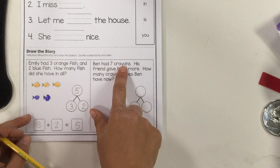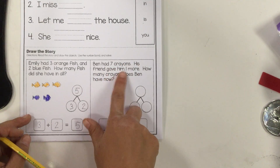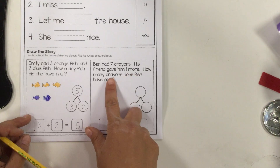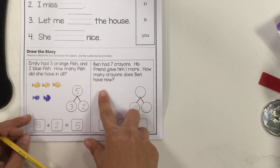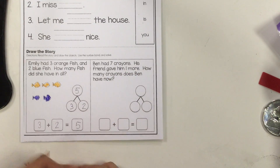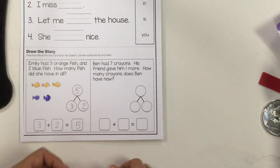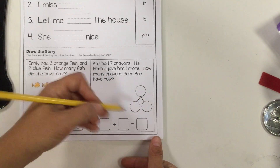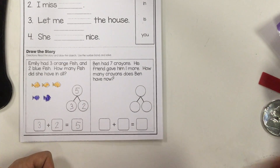Ben had seven crayons. His friend gave him one more. How many crayons does Ben have now? So he has more than seven — that's your hint. Fill out the rest, draw your picture, and that should be it. Go and do it. Thank you.